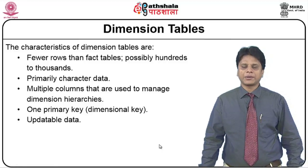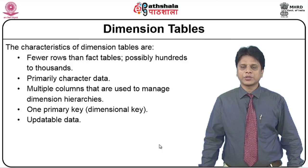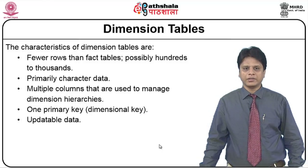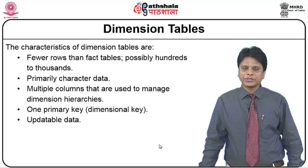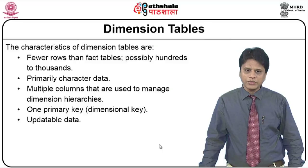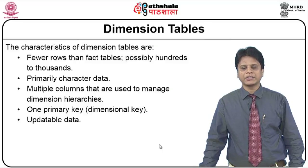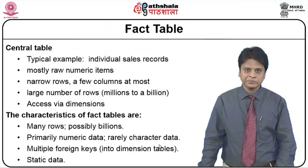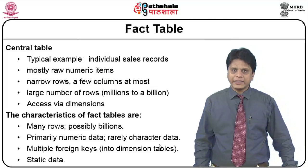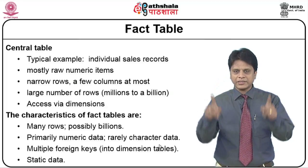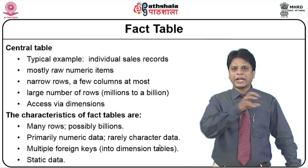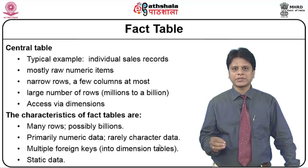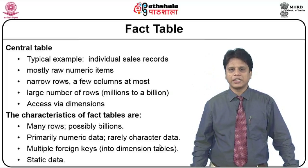Some characteristics of dimension tables: they have fewer rows than fact tables — possibly hundreds to thousands to a few million. The dimensional data are character data. They involve multiple columns used to change dimension hierarchies. They have only one primary key as a dimensional key, and those are also updatable data. Whereas the fact table is a centralized data warehouse table that involves the keys from all dimension tables — picking up all the primary keys as reference points from all dimensional tables, collected and put forth on a centralized fact table.